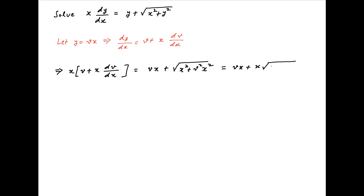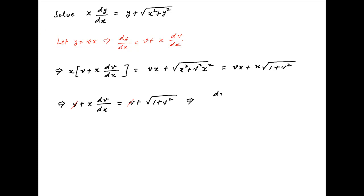The right hand side is equal to vx + x√(1 + v²). This simplifies to v + x dv/dx = v + √(1 + v²). v cancels across both sides, and separating the variables, we get dv / √(1 + v²) = dx/x.